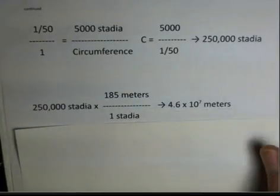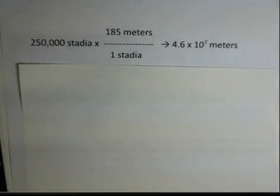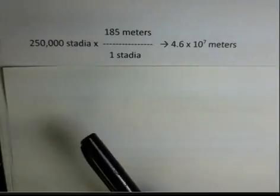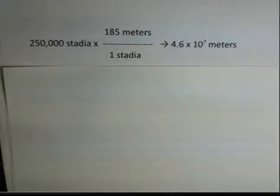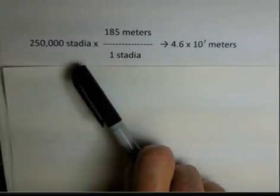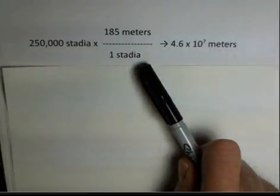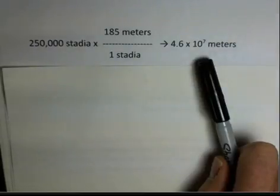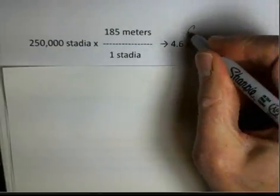That would be the circumference of the Earth. Now, the Wikipedia article talks a little bit about stadia and how they've been estimated. According to the Wikipedia article, our best guess now is the stadia was about 185 meters. So 250,000 stadia times this conversion factor, 185 meters for one stadia. And we get 4.6 times 10 to the 7th meters. And what are we calculating here? This is the circumference of the Earth.